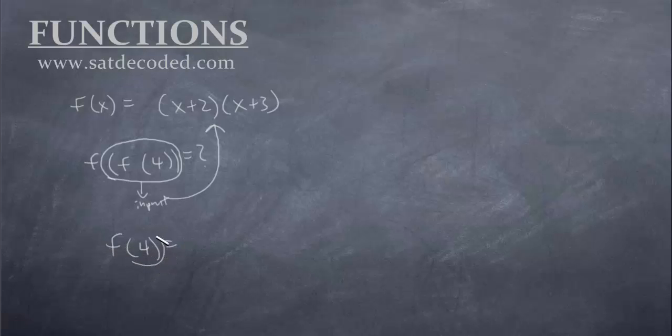Our 4 right here is our input. So let's put it in where the x's are, right here and right here. So we get (4 + 2)(4 + 3), which is equal to 6 × 7, which is 42. So f(4) is equal to 42, and our 42, that is an output.